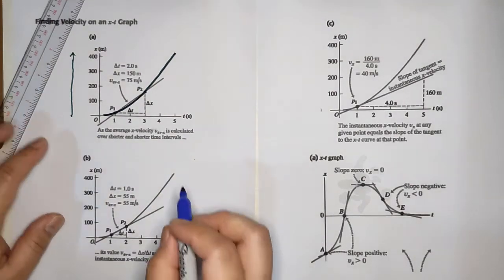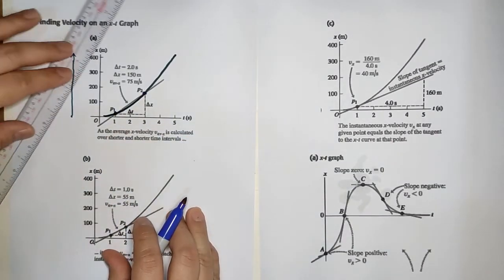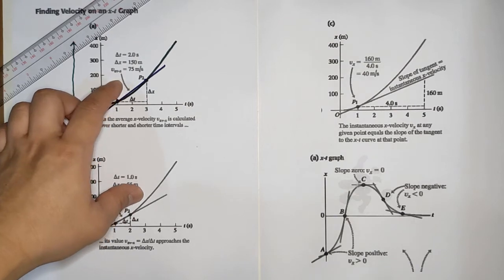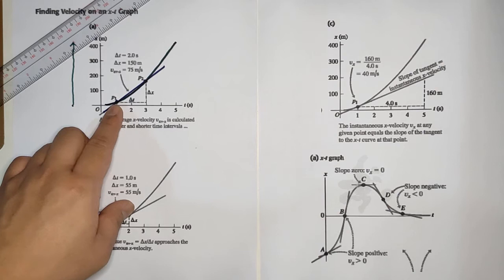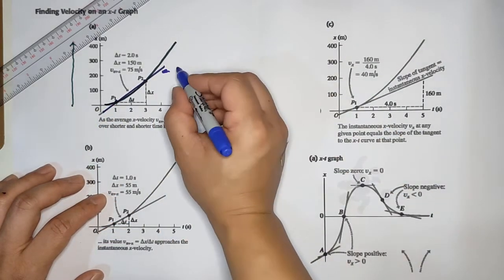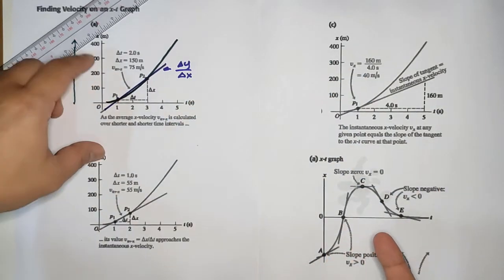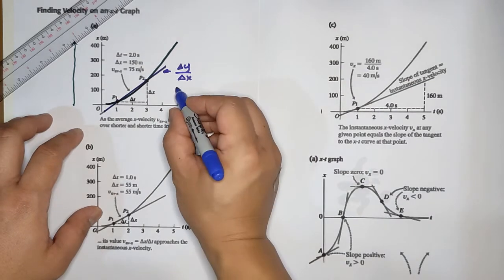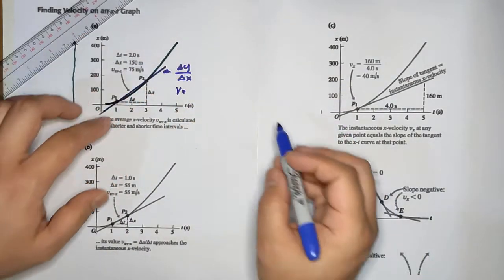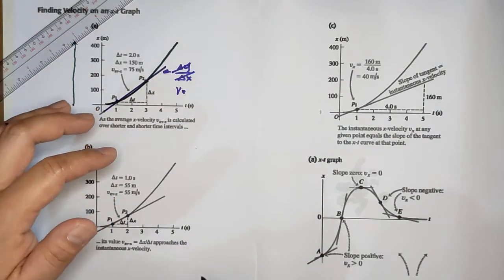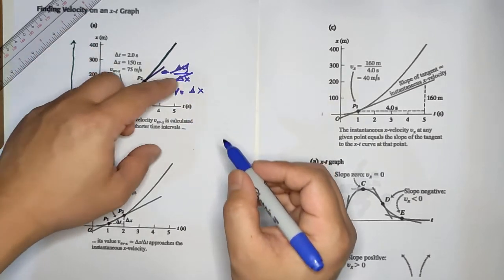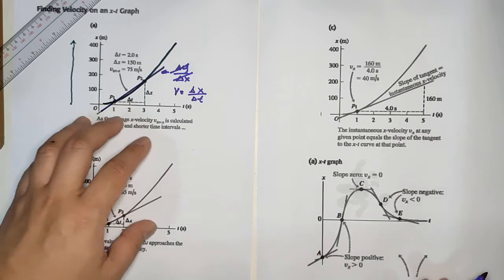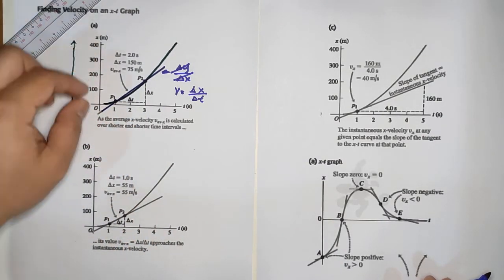You can get the average velocity from P1 to P2. That line is the slope, and the average velocity is the slope. Slope is rise over run, or delta y over delta x. For velocity, it's delta x over delta t — that is the rise over run, that is the slope of the line.